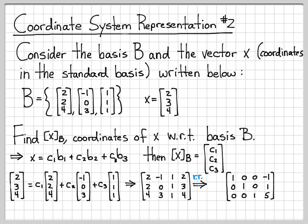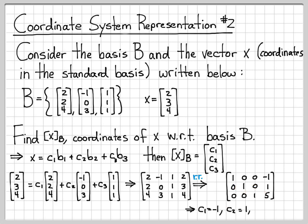After row reduction, we end up with an identity matrix on the left, and the final column equal to negative 1, 1, 5. This tells me that c1 equals negative 1, because the first row says 1·c1 = -1. The second row tells me that 1·c2 = 1, and the third row tells me that 1·c3 = 5. So the coordinates c1, c2, and c3 are negative 1, 1, and 5 respectively.